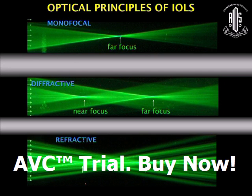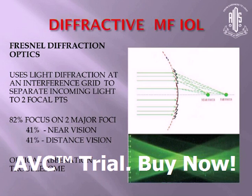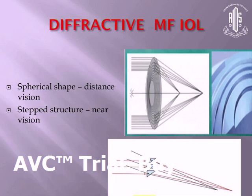The diffractive multifocal IOLs use the principle of Fresnel diffraction optics, which uses light diffraction at an interface grid to separate the incoming light into two focal points. About 82% of the light is split into half for both near and distant images, and the remaining 18% is scattered and lost. In the diffractive multifocal IOLs, the overall spherical shape of the lens produces an image for distant vision, and the step structure produces the image for near vision.